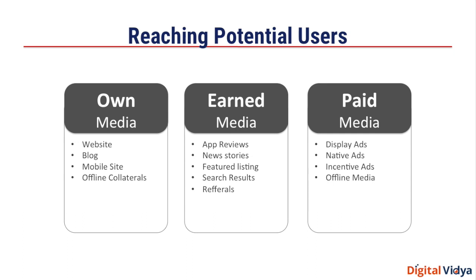To reach your potential users, you have three broad types of media available to you. The first is your own media — things like your website, blog, your mobile site, and other offline collaterals. The next is earned media, which includes app reviews, news stories, getting featured on the app store, or users referring your app to others. The third is paid media, where you pay an ad platform to show ads to users as they browse other sites or use other apps — things like display ads, native ads, incentivized ads, or even offline media such as billboards and TV.